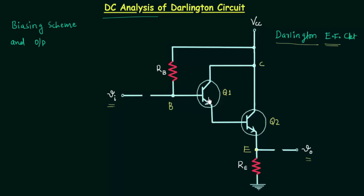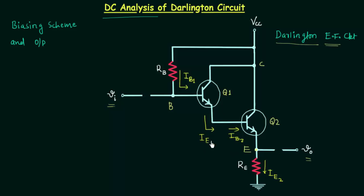The current through resistance RB is the base current of the first transistor, represented as IB1. The current through resistance RE is the emitter current of the second transistor, represented as IE2. This current is the emitter current of the first transistor IE1, and this current is the base current of the second transistor. Since two different currents cannot flow through the same wire, IE1 is the same as IB2. This current is the collector current of the second transistor, and this is the collector current of the first transistor. Together these two transistors make one single transistor called the Darlington transistor.